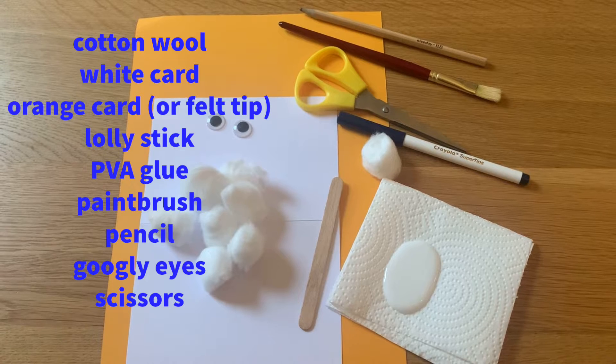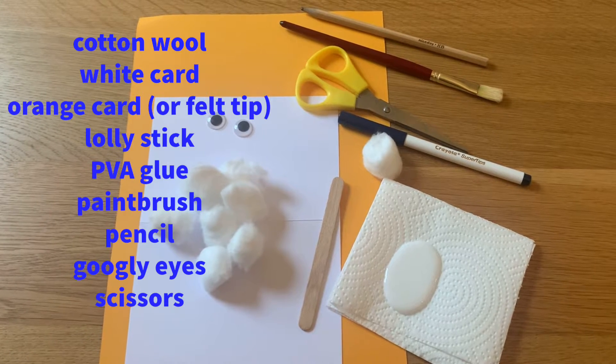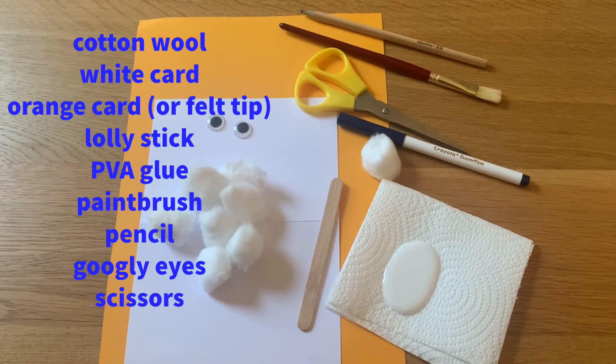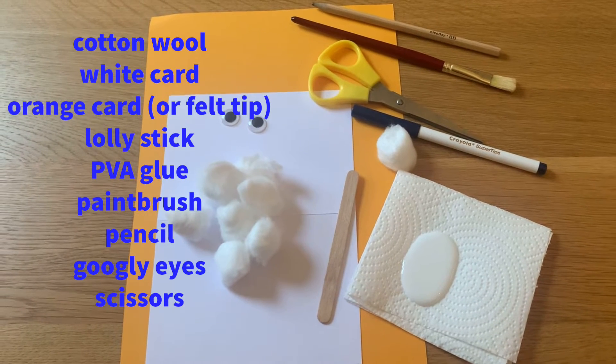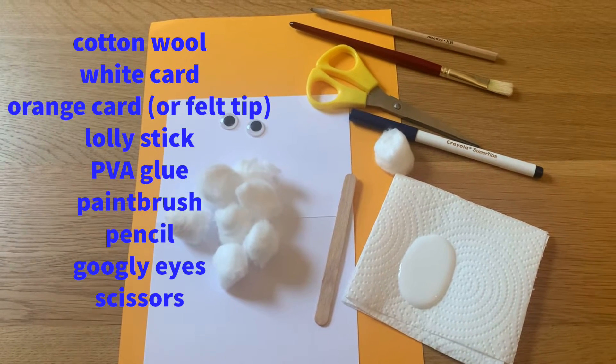For this you'll need cotton wool, white card, orange card or a felt tip, a lolly stick, PVA glue, paintbrush, a pencil, some googly eyes if you have them, and some scissors.